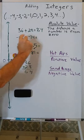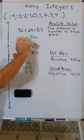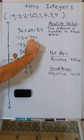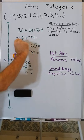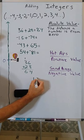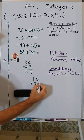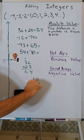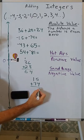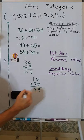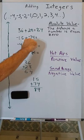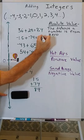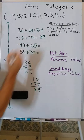In this case, we have sandbags and sandbags. This will make the balloon go down 15, and this will make the balloon go down 74. So it's going to go down 15 and then 74 more. We add the absolute values — how far each number is from zero — and the balloon goes down a total of 89, ending at negative 89.